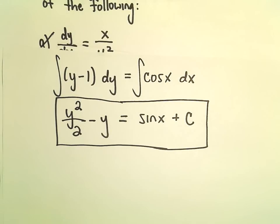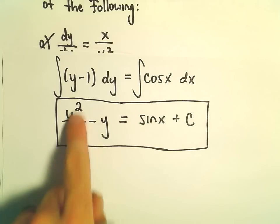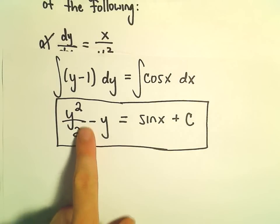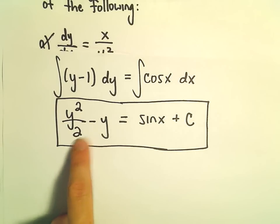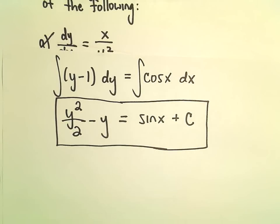So, here I'm just going to leave it alone and say our solution to the original differential equation would be y squared over 2 minus y equals sine x plus c.